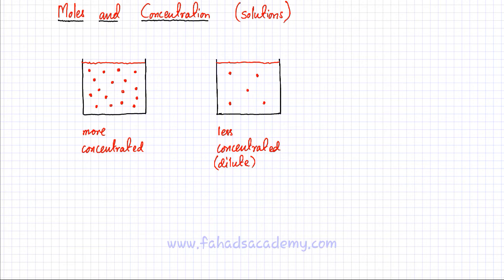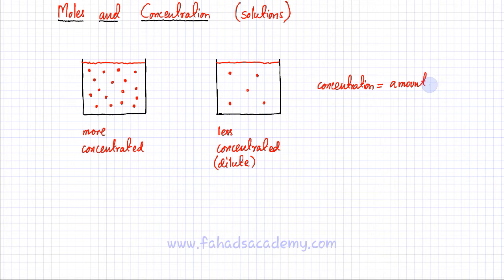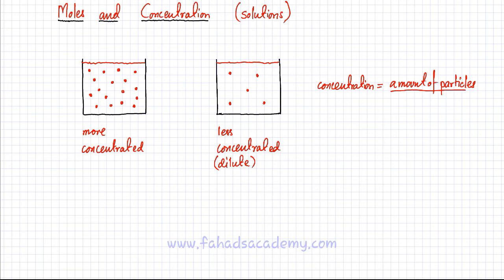When we refer to concentration, what we mean is the amount of particles per unit volume — the amount of particles present in a specific volume of solution. If the amount of particles is large, it's more concentrated; if less, it's less concentrated. We can derive a formula for concentration from this idea.